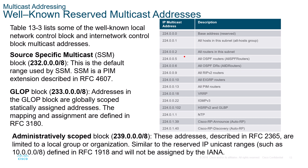The administrative scope block — 239.0.0.0/8 as described in RFC 2365 — is limited to a local group, similar to a private network. IANA will not assign these addresses; they are for internal use only and cannot be used by outside equipment.